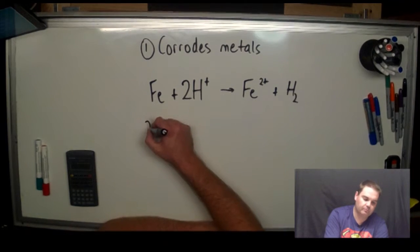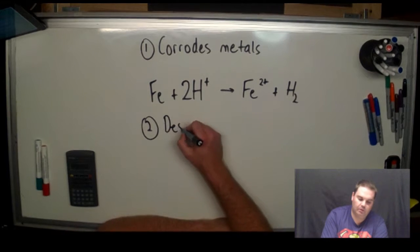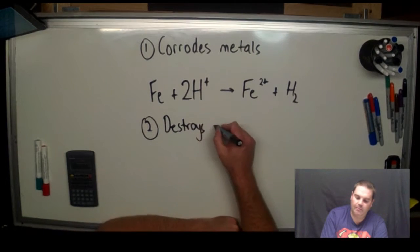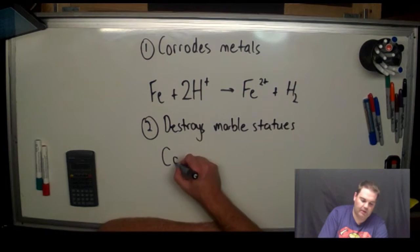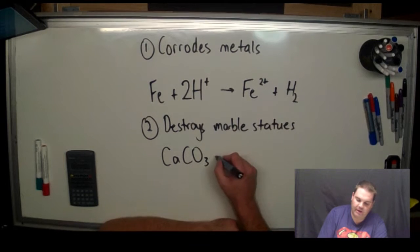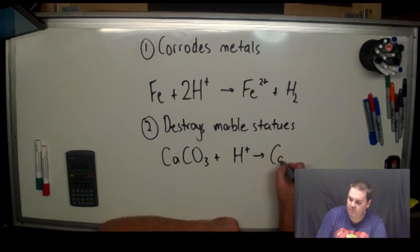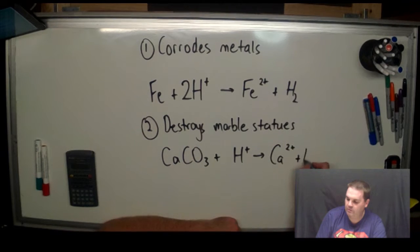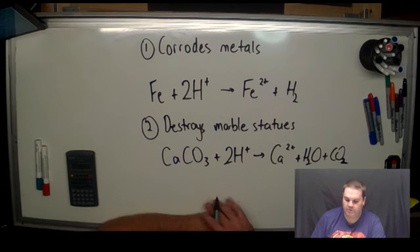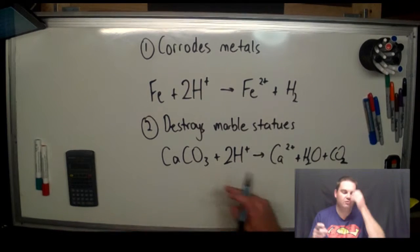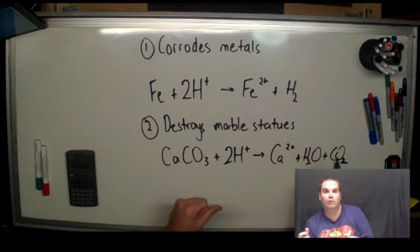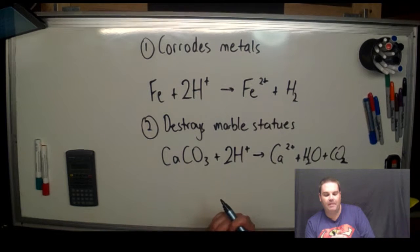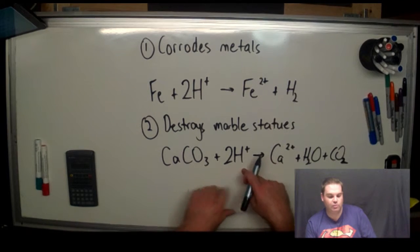Number two, it destroys marble statues. Marble is calcium carbonate. So a carbonate plus an acid gives you mobile calcium ions, water and carbon dioxide. Just a straightforward carbonate acid reaction. So marble statues, particularly in places like Europe where they've got a very high population density, which means a lot of pollution is going up into the air, acid rain can actually destroy these marble statues.